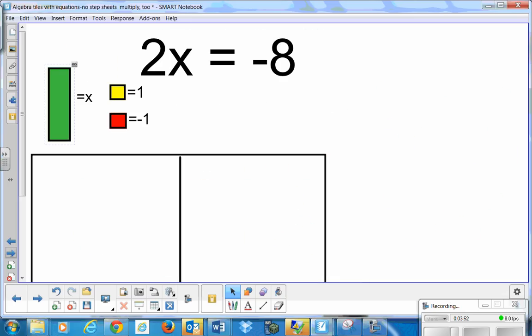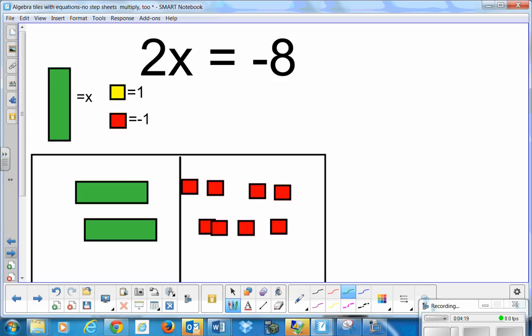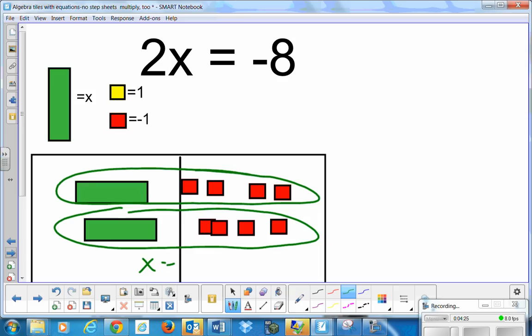Let's try one more with multiplication. If I have 2 x's, and that's equal to negative 8, and we all know our negatives are the red tiles, I need to get 8 red tiles. And I need to divide them into 2 groups because it's 2 x's. Each x represents 4 negative tiles. So x is equal to negative 4.